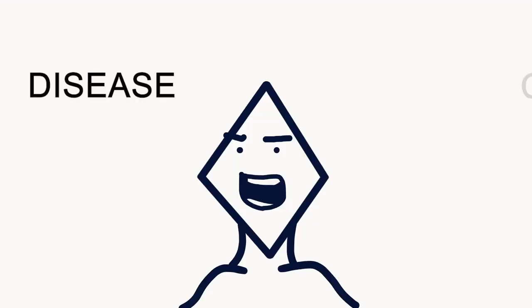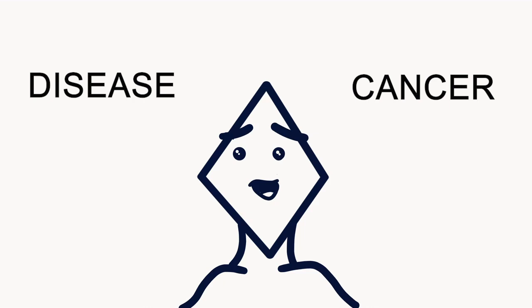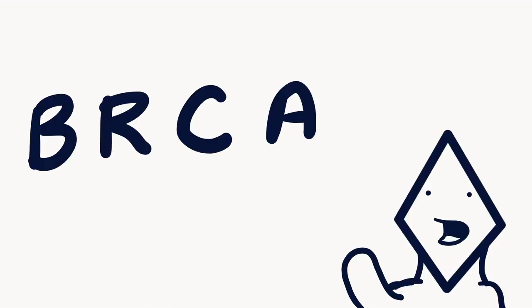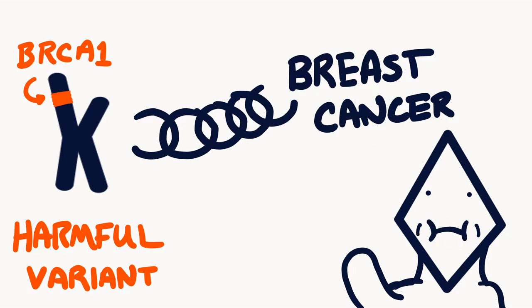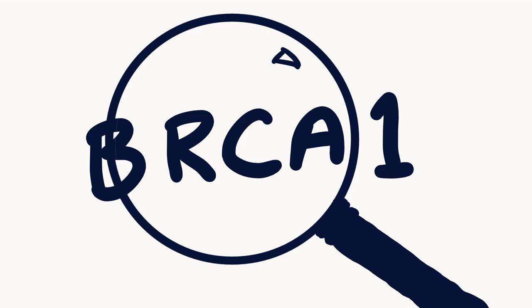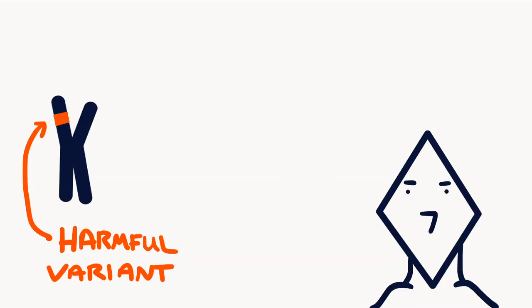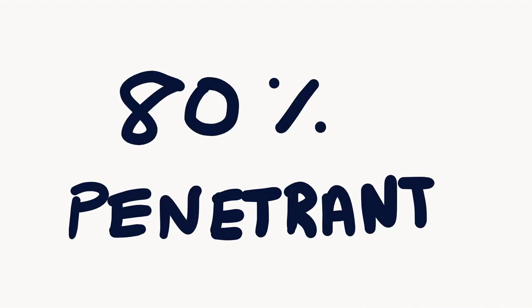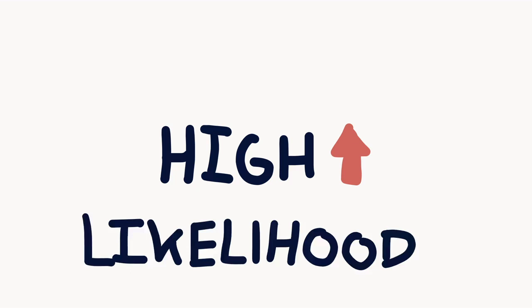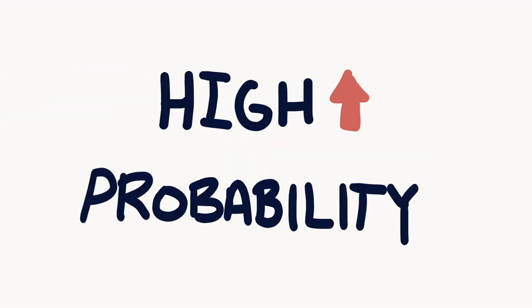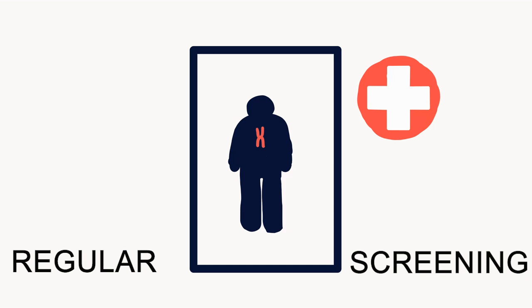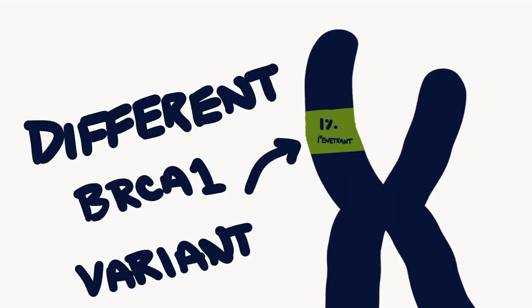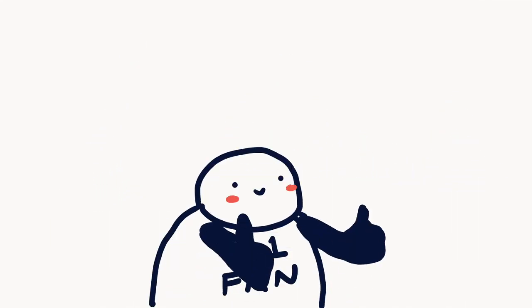So what does this mean for something like a disease or cancer? A great example is the BRCA1 gene, which is linked to breast cancer, and it's one of the most commonly screened genes at a genetic counseling appointment. If you have a variant in BRCA1, you have a likelihood to develop breast cancer. If you have a high penetrance like 80% for a BRCA1 variant, you have a high probability of getting breast cancer and should get regular screenings. The opposite is true with a low penetrance like 1%, meaning a low probability of getting breast cancer and probably less need for regular screenings.